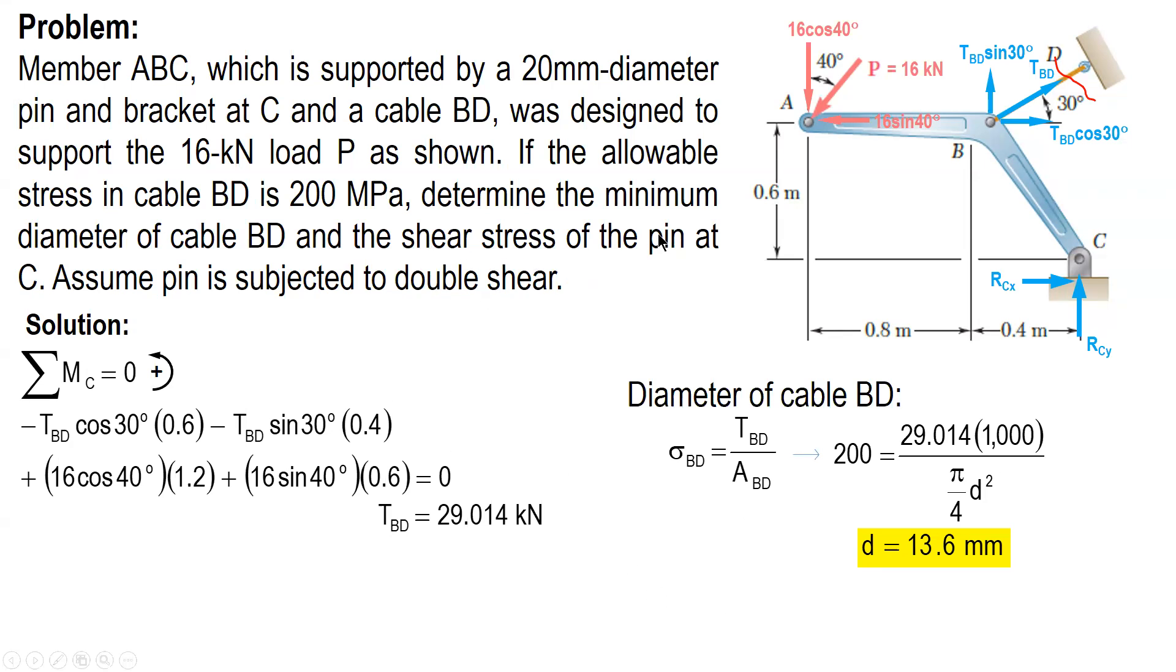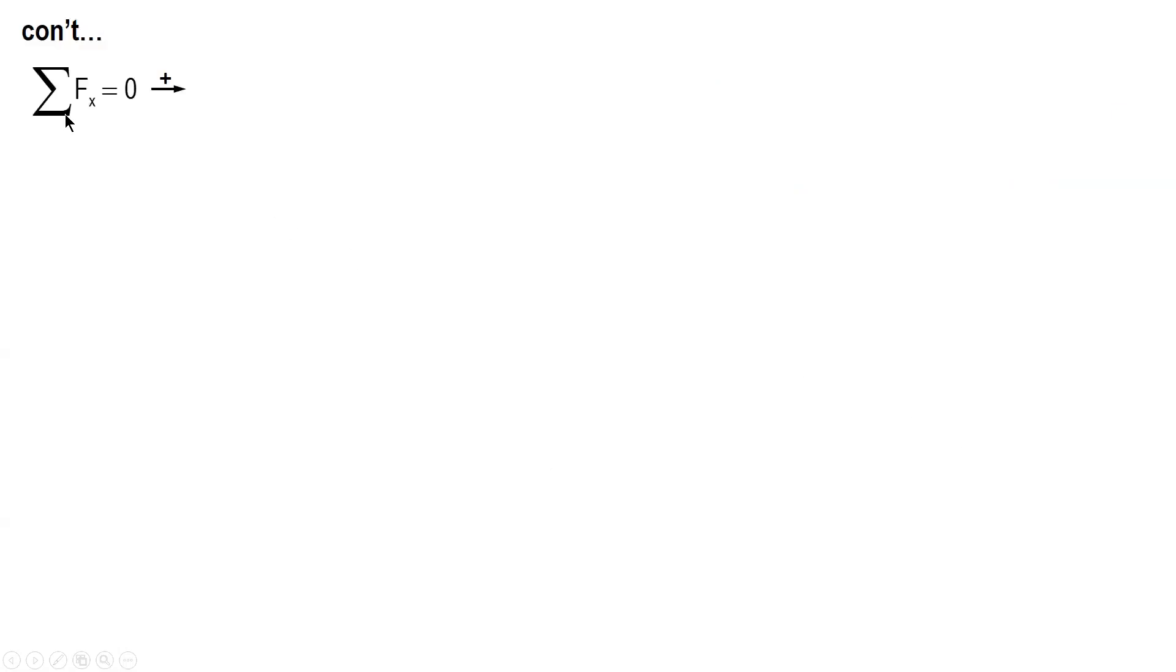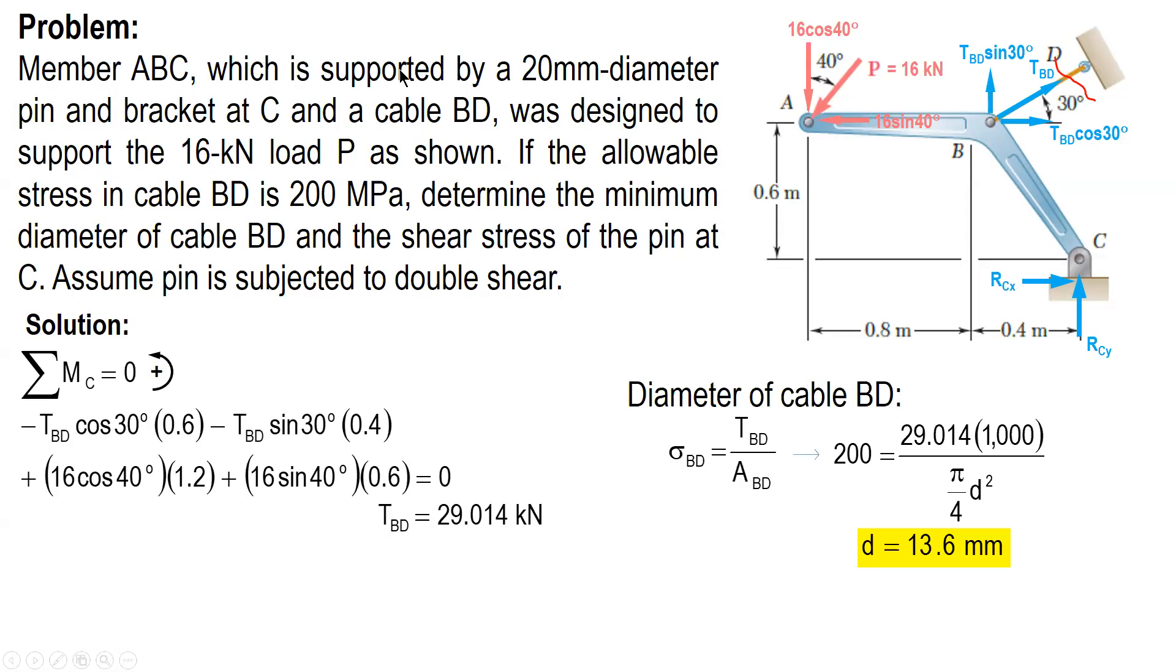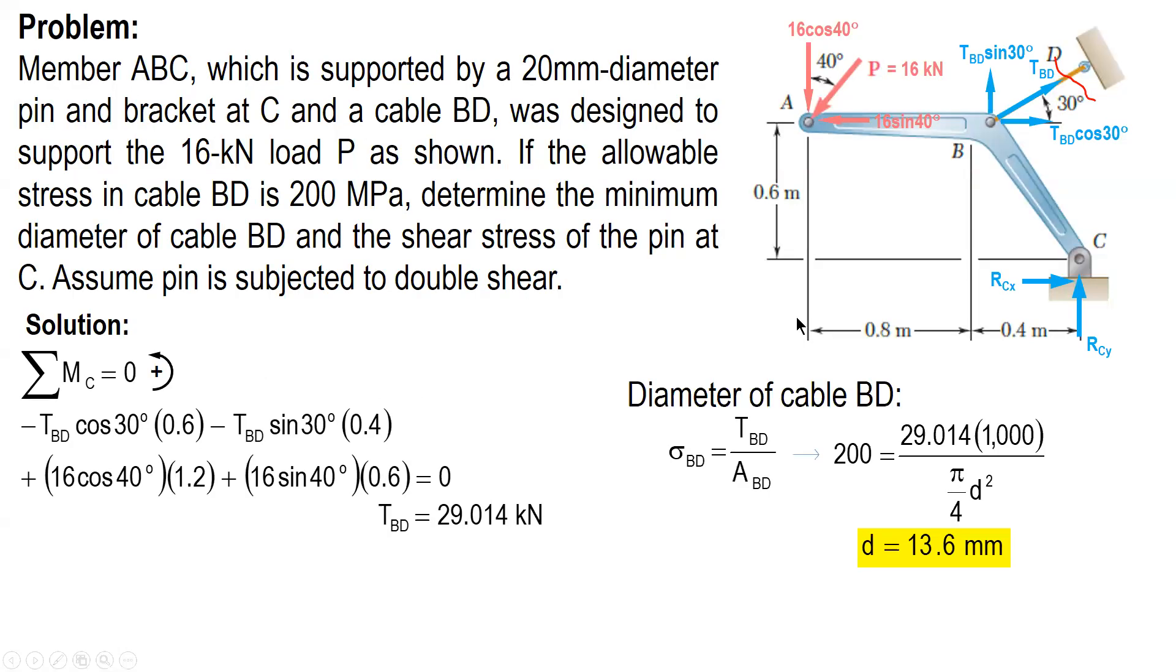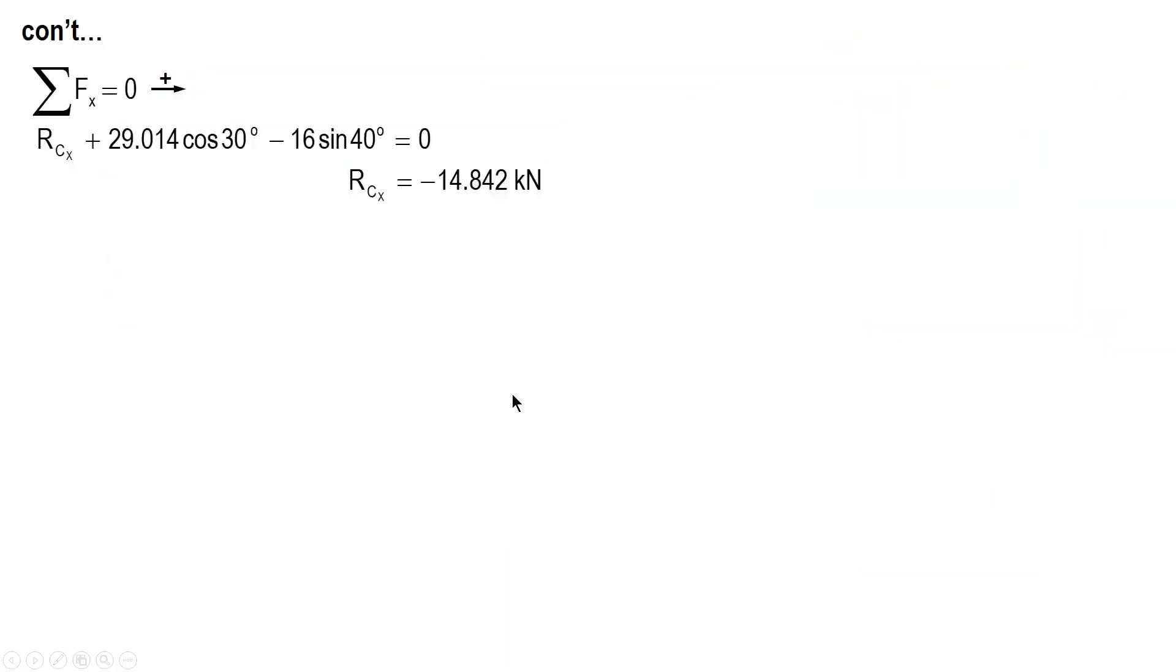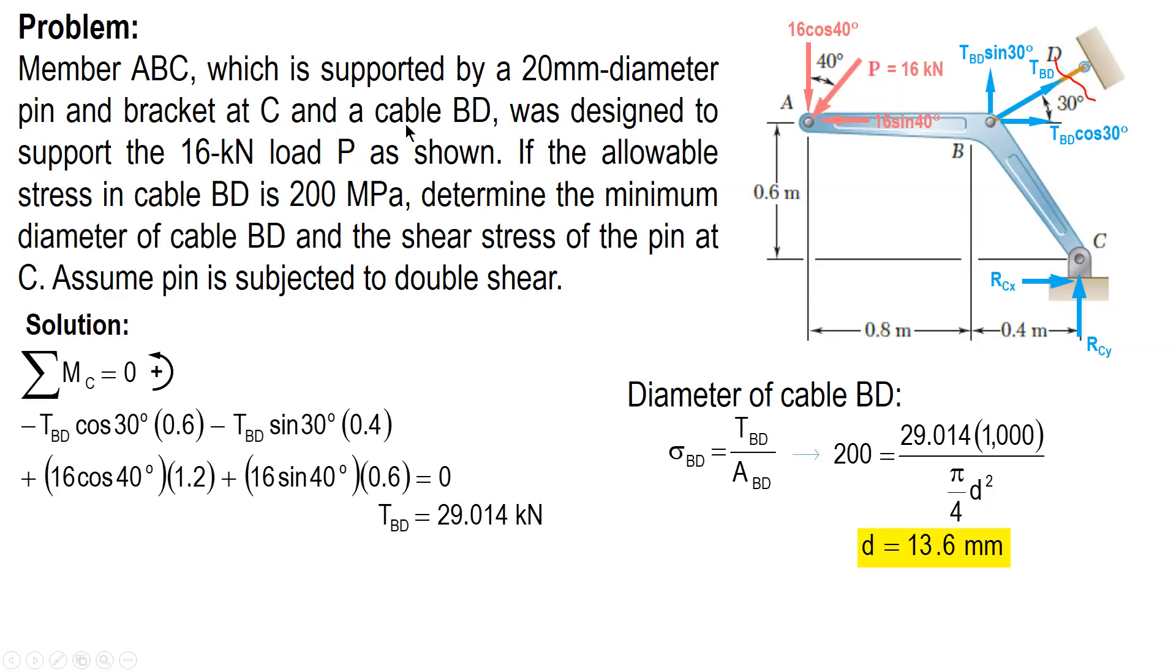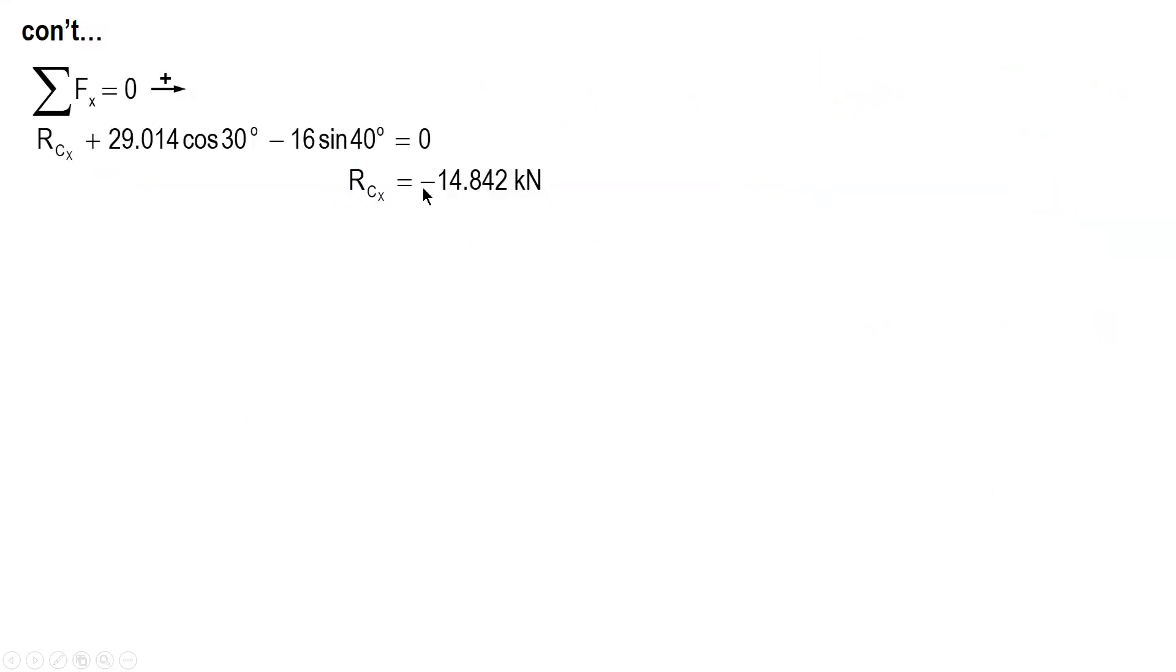Okay. The second one is the shear stress. So we need to solve for RCX and RCY, and then determine the magnitude or the resultant. So let's sum up for the horizontal. There are three forces. One, two, and three. RCX plus to the right, to the right, and left. Negative, therefore, since the assumed direction is to the right and we get a negative value, therefore the correct direction of RCX is to the left.